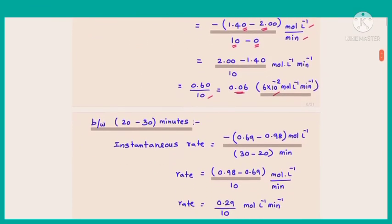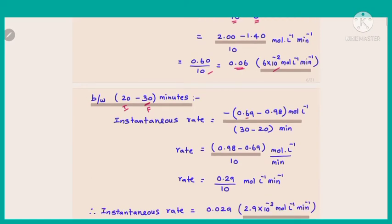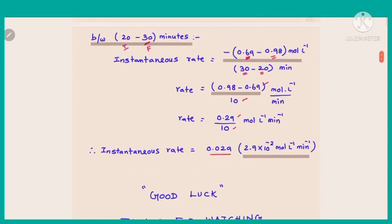Now let us calculate the rate between 20 and 30 minutes. Final time is 30 minutes, initial time is 20 minutes. Final concentration at 30 minutes is 0.69 mol/L; at 20 minutes it is 0.98 mol/L. So: (0.98 − 0.69) / (30 − 20) = 0.29 / 10 = 0.029, which is 2.9 × 10⁻² mol/L/min. This is the rate of the reaction between 20 and 30 minutes.